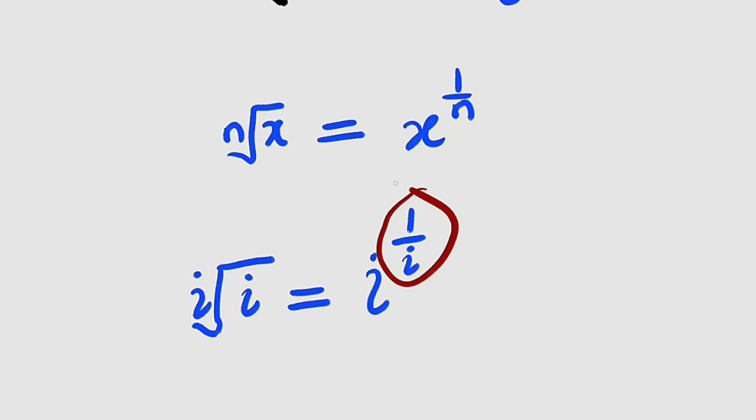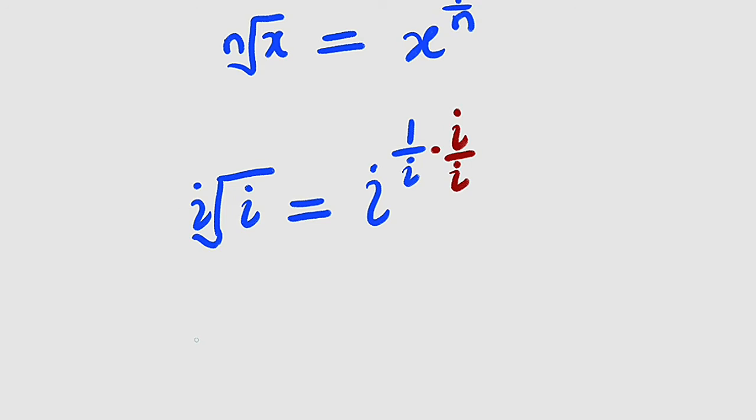Now we can rationalize this by multiplying the top and the bottom by i. So we multiply by i divided by i, which is the same thing as 1. If you do that, you have i-th root of i equal to i to the power of i times i, which is i.